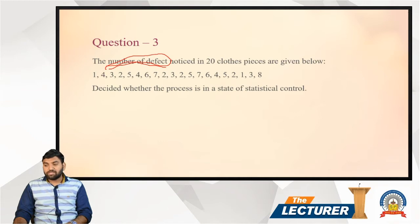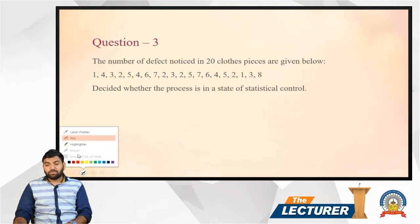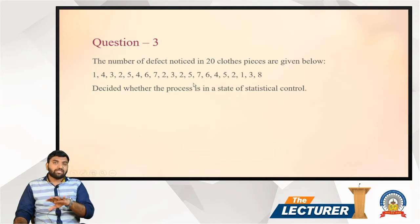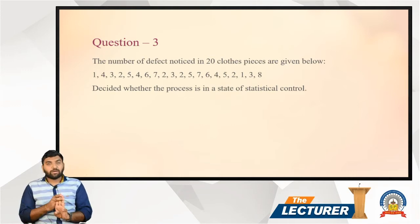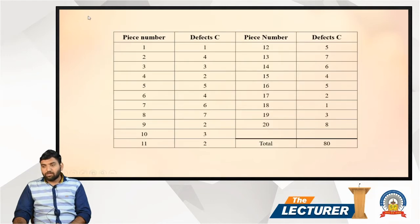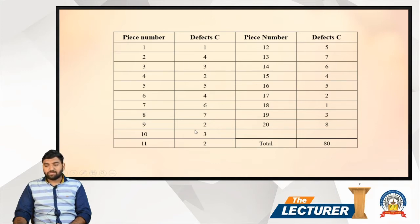We have 20 cloth pieces per unit. The piece numbers are 1 through 20, with defect counts: 1, 4, 3, 2, 5, 4, 6, 7, 2, 3, 2, 5, 7, 6, 4, 5, 2, 1, 3, 8.